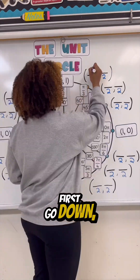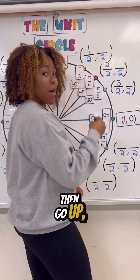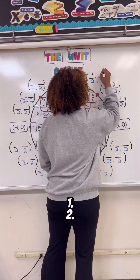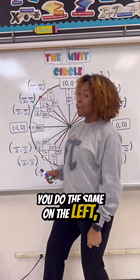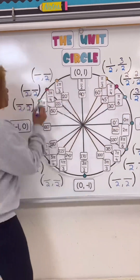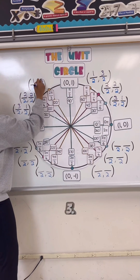First go down: 1, 2, 3. Then go up: 1, 2, 3. You do the same on the left you see: 1, 2, 3. 1, 2, 3.